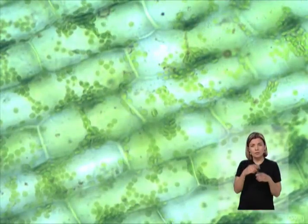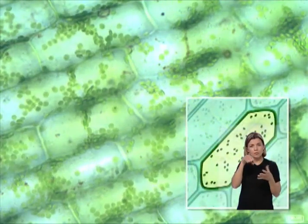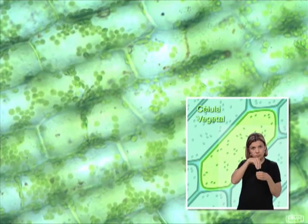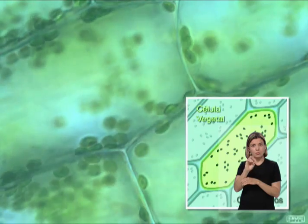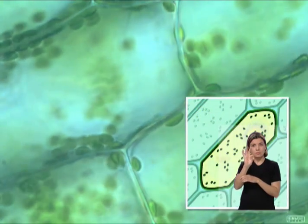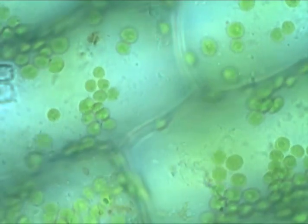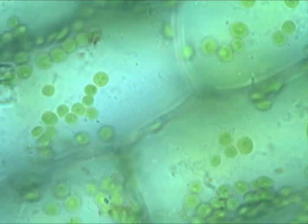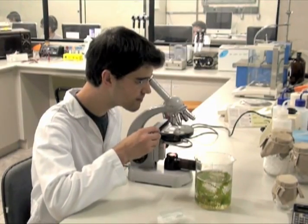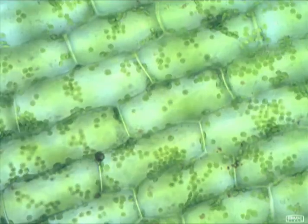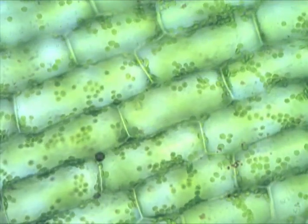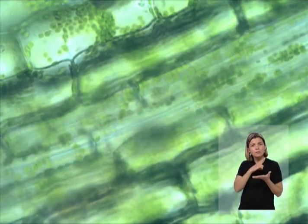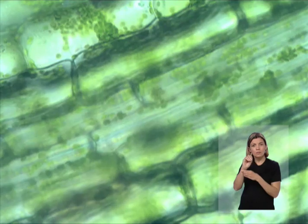As moléculas de clorofila ficam em um compartimento especial dentro das células fotossintetizantes, os cloroplastos. A cor verde dos organismos fotossintetizantes se deve à presença de clorofila.